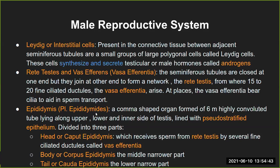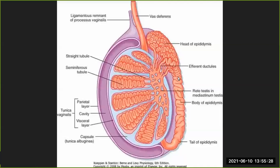The next structure is the epididymis, also called epididymidis. It is a comma-shaped organ formed of a six-meter highly convoluted tube. Despite being six meters long, it can fit above the testis because it is so convoluted. It lies along the upper, lower, and inner side of the testis and is lined with pseudostratified epithelium.